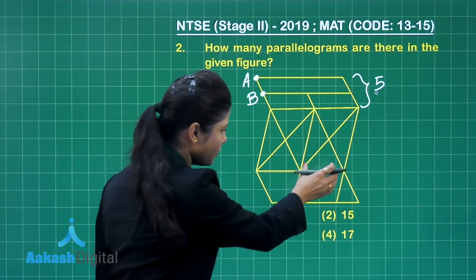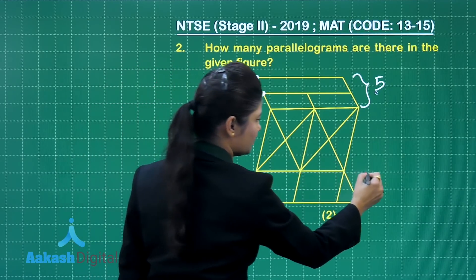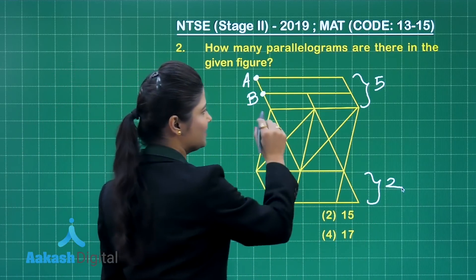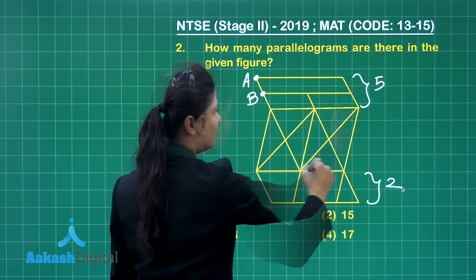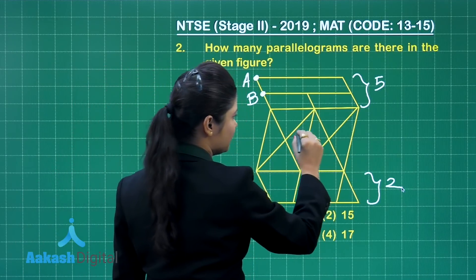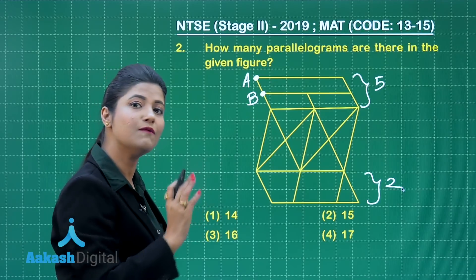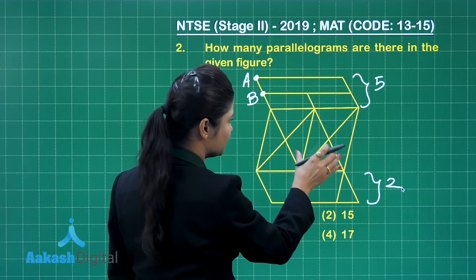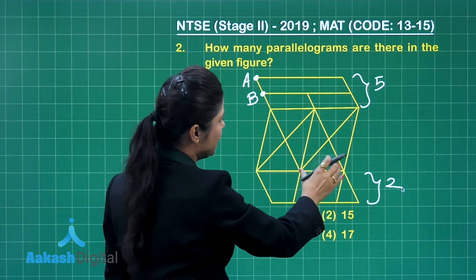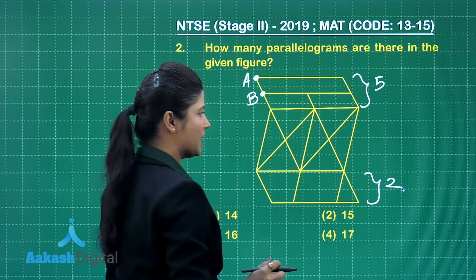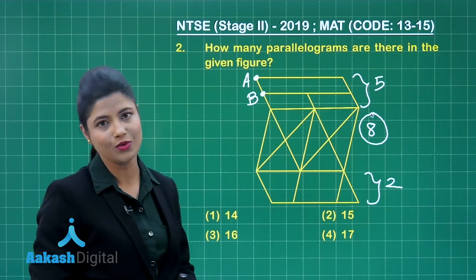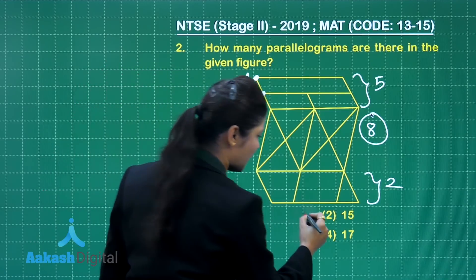Coming to the lower portion, there is a clearly visible smaller parallelogram and a bigger parallelogram, giving 2 parallelograms from the lower end. Now the central part is a bit complex. There is a bigger parallelogram — that is 1. Two partitions give 2 more, totaling 3. In the centre there is a rhombic parallelogram — that is 4. Then parallelograms 5 and 6, and when elongated, I get the 7th and 8th. So the central part gives 8 parallelograms. Adding: 5 plus 8 equals 13, plus 2 equals 15 total parallelograms.